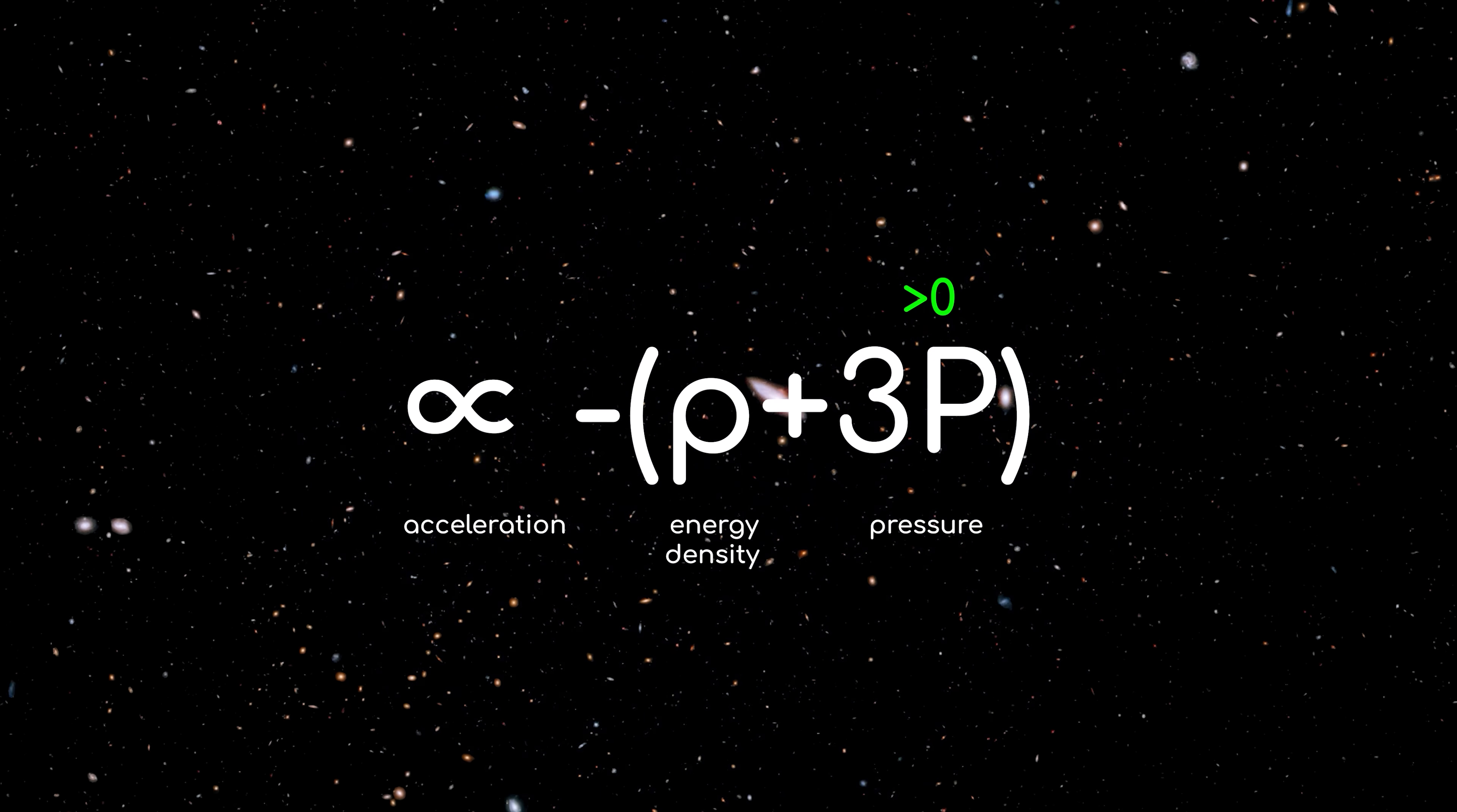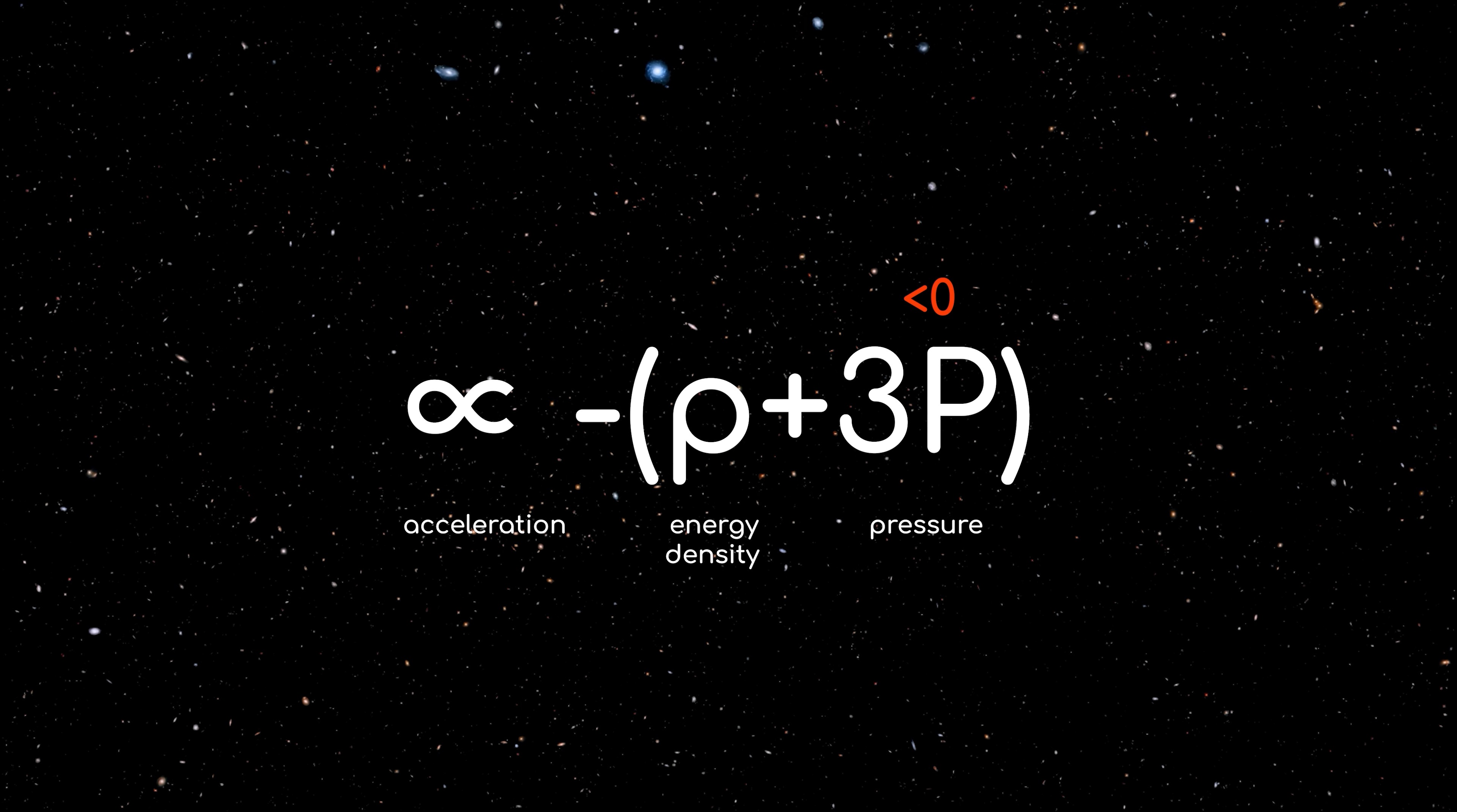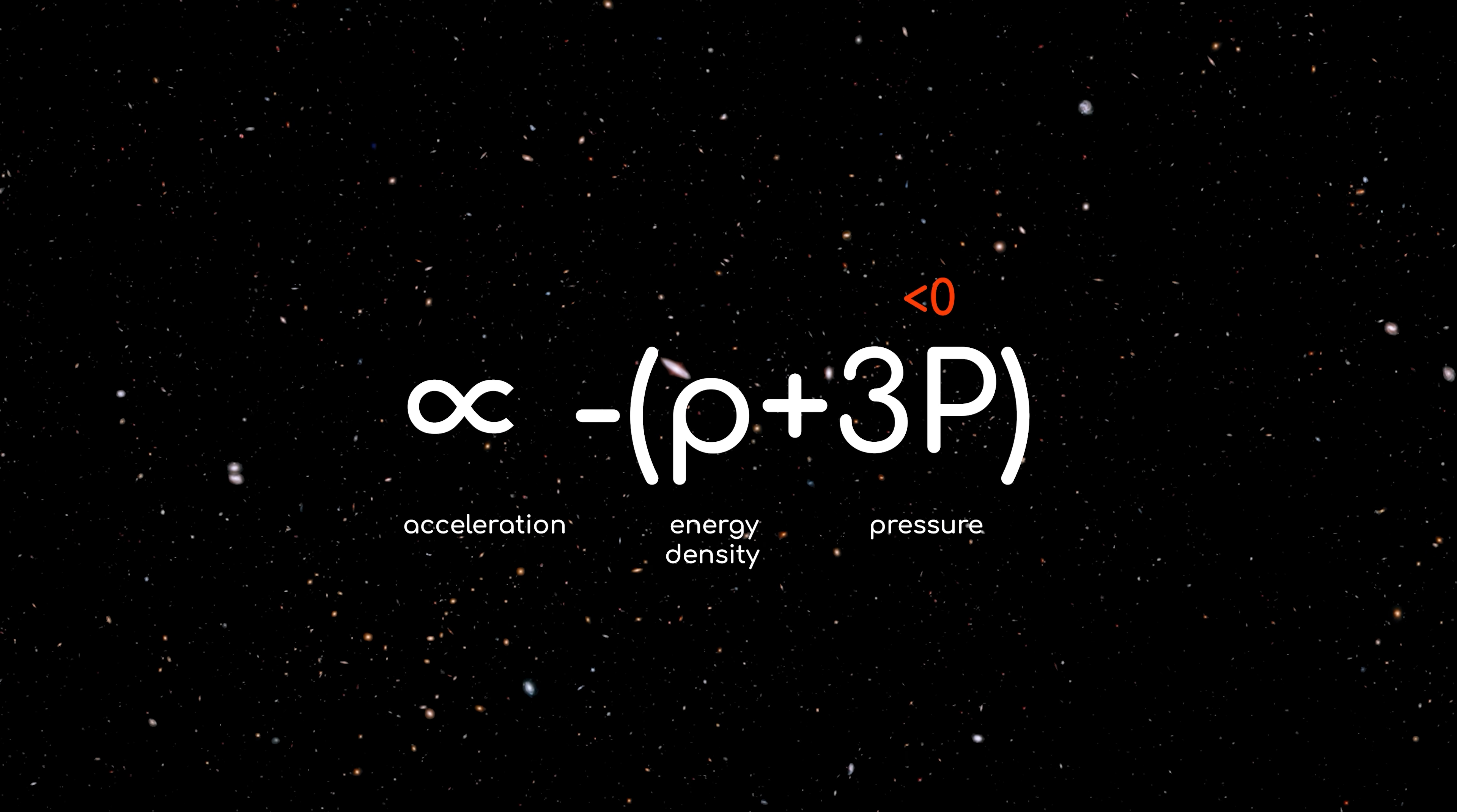However, conceivably, if you were somehow to set the values of this equation so that pressure was negative and greater than the positive energy density, that minus sign would cause the whole thing to flip and you would accelerate the stretching of space. In effect, you would end up with a volume of space filled with a kind of anti-gravity, a dark energy.